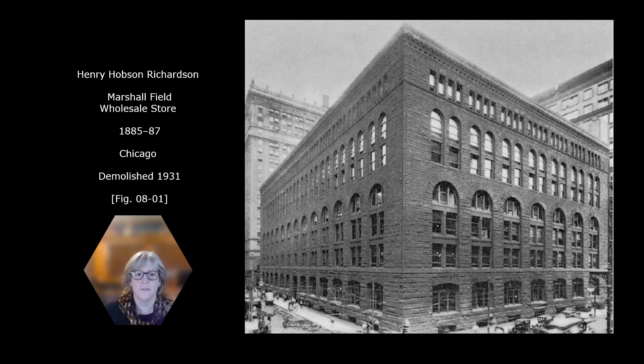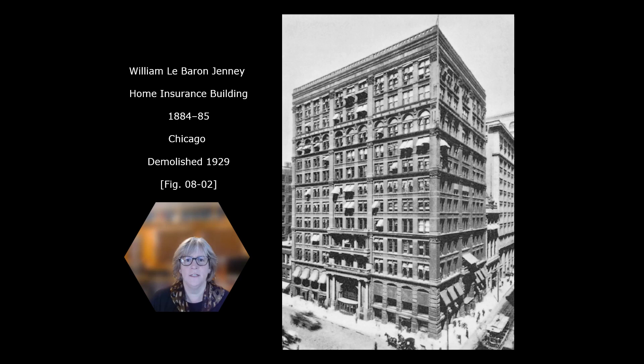Two notable architects from the Chicago School are Louis Sullivan and Frank Lloyd Wright. This building was demolished in 1929. It was by William LeBaron Jenney, considered a proto-skyscraper with true skyscraper construction. It was built by an internal metal skeleton construction and also had an elevator, which enabled buildings to be built higher. It was unrealistic to expect people to climb 10 flights of steps every day, so the elevator made that possible.